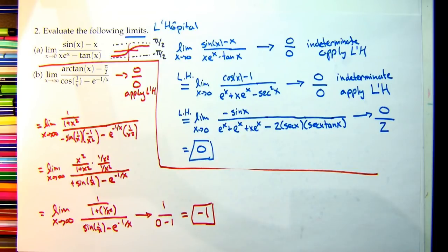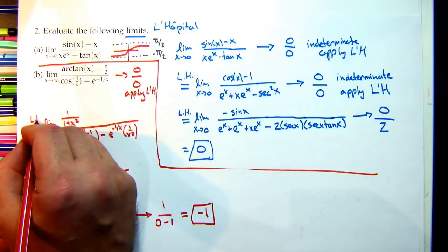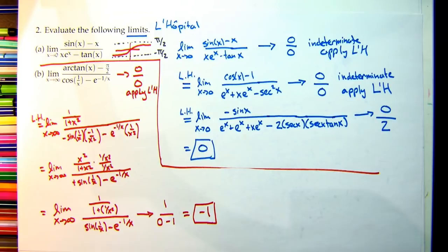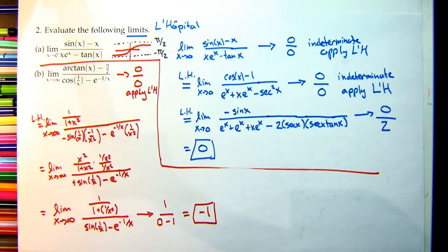The answer to part B is −1. Always mark where you applied L'Hôpital so it's clear. Note: multiplying top and bottom by x² is multiplying by one — algebraic manipulation is always allowed, even after applying L'Hôpital. Just choose a well-motivated multiplier.